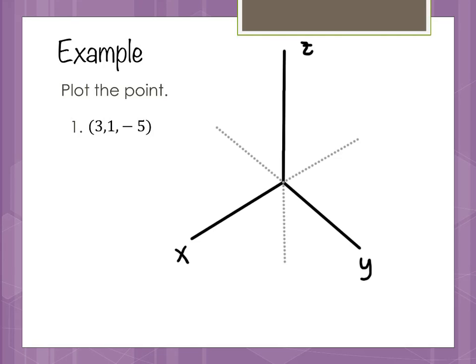The point we're plotting is (3, 1, -5), where the coordinates are X, Y, Z. The X value of 3 means we move 3 out along the positive X axis. Then we move 1 along the positive Y axis. Drawing dotted lines for perspective, our point — considering just those two coordinates — would be at that corner. But we actually need to go down 5 in Z as well.